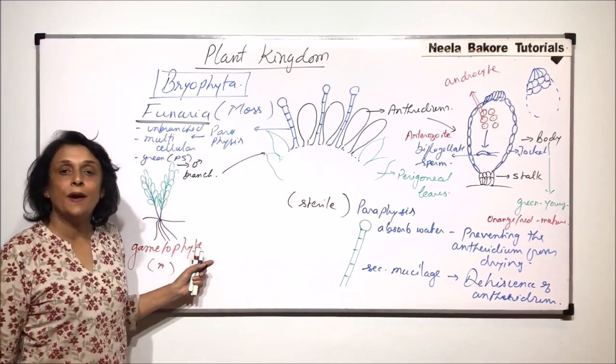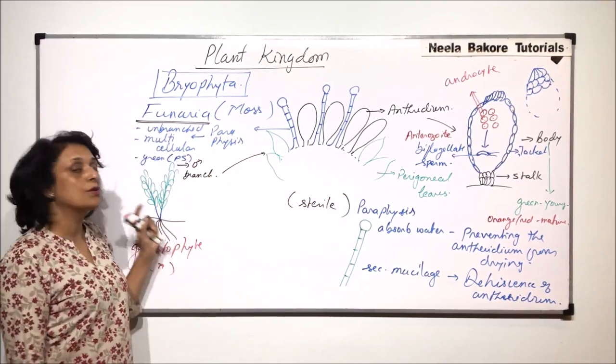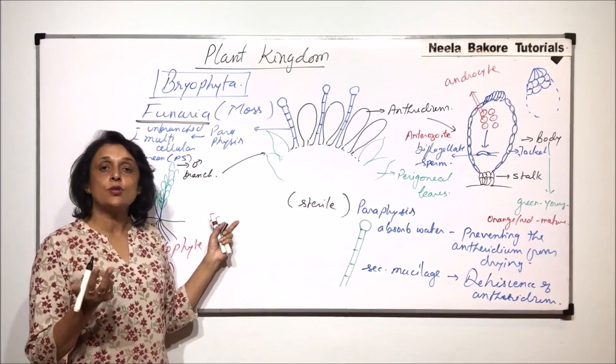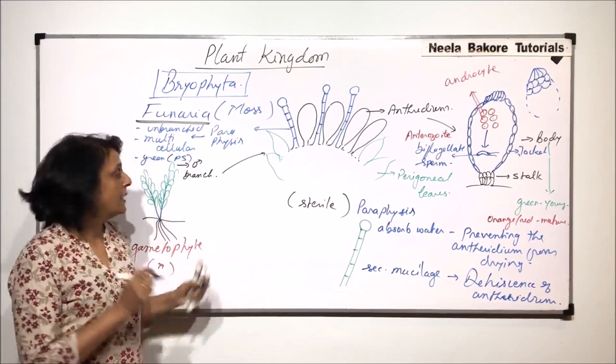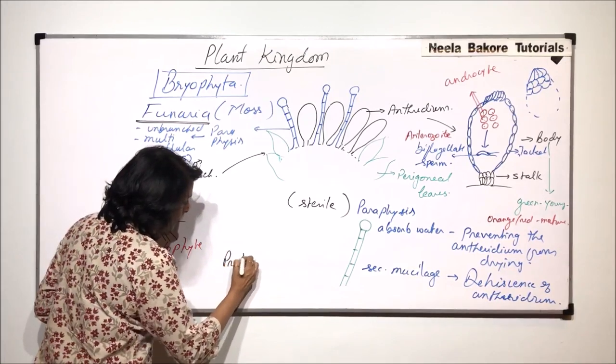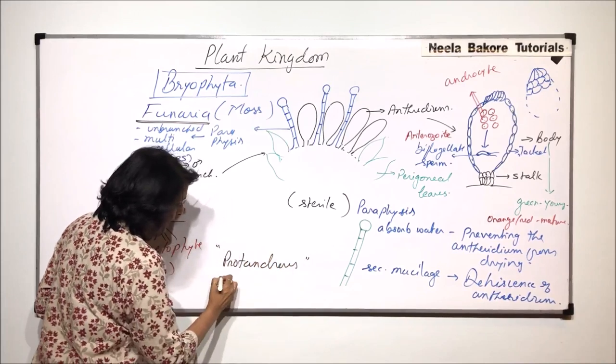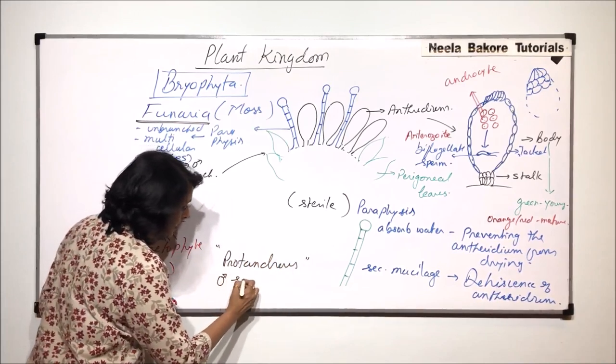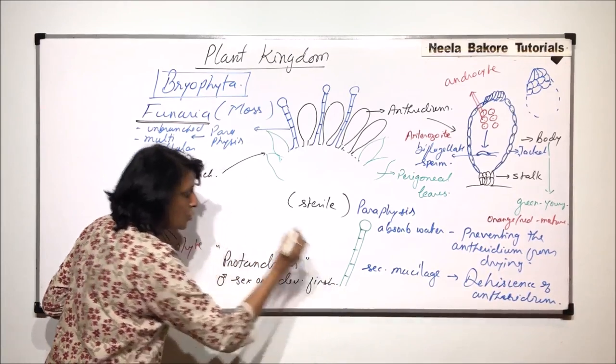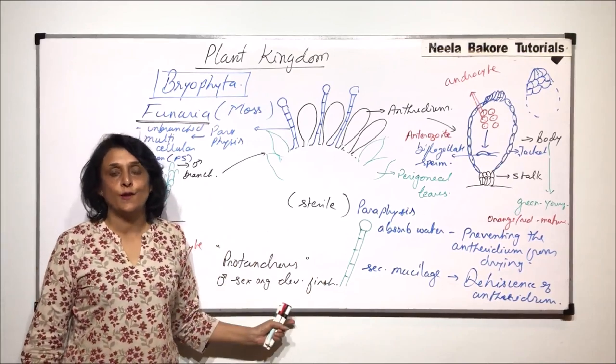In case of this gametophyte, one branch is going to produce the male gamete and the other branch is going to produce the female gamete. That means both the sex organs are developing on the same plant. But in case of Funeria, it is protandrous. Protandrous means the male sex organs develop first.